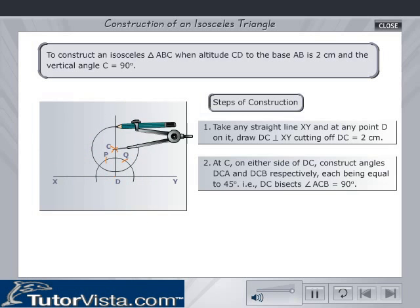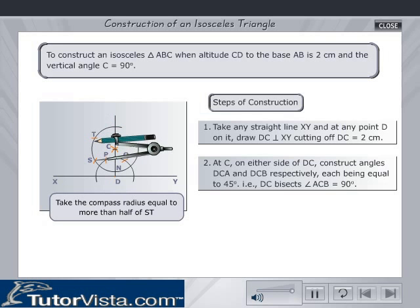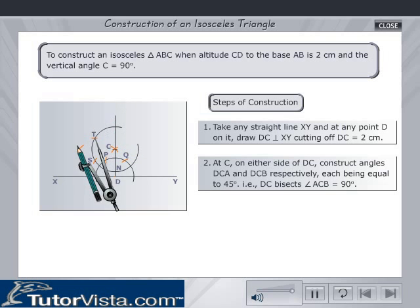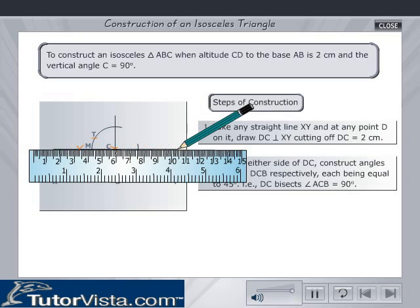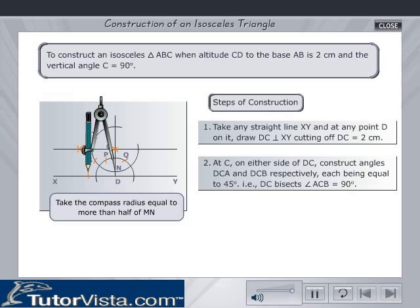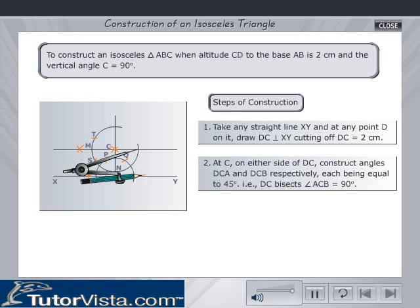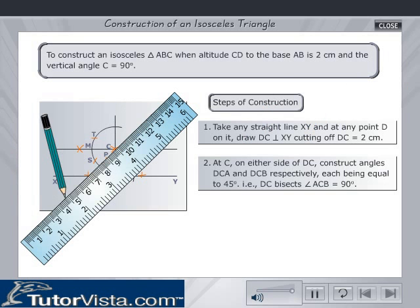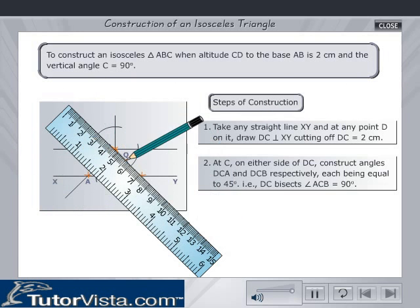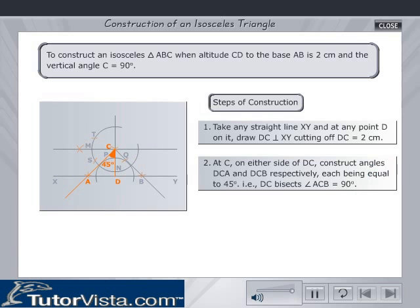At C, on either side of DC, construct angles DCA and DCB respectively, each being equal to 45 degrees; that is, angle ACB is equal to 90 degrees.